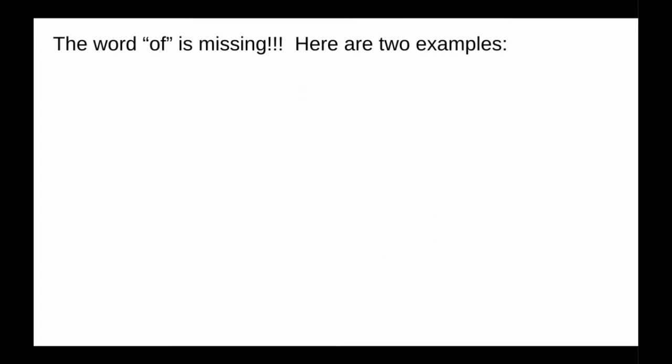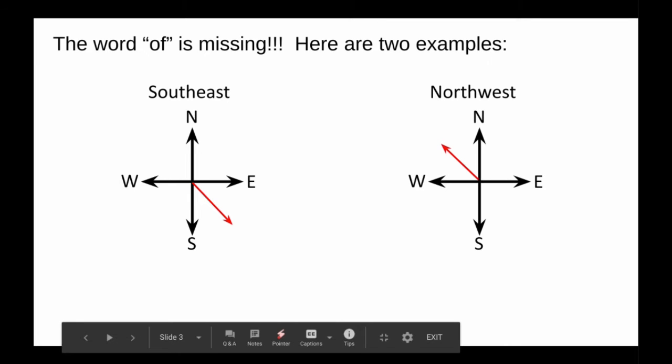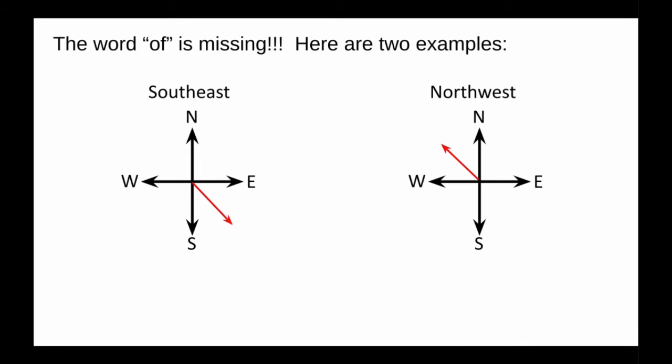Now, there is another phrase that occurs where the word of is not there. You may see something like southeast and northwest. What that means is that the vector is placed at the south and east quadrant, the other vector on the north and west quadrant, and it's exactly at 45 degrees. On both sides of the vector, it's just 45 degrees.